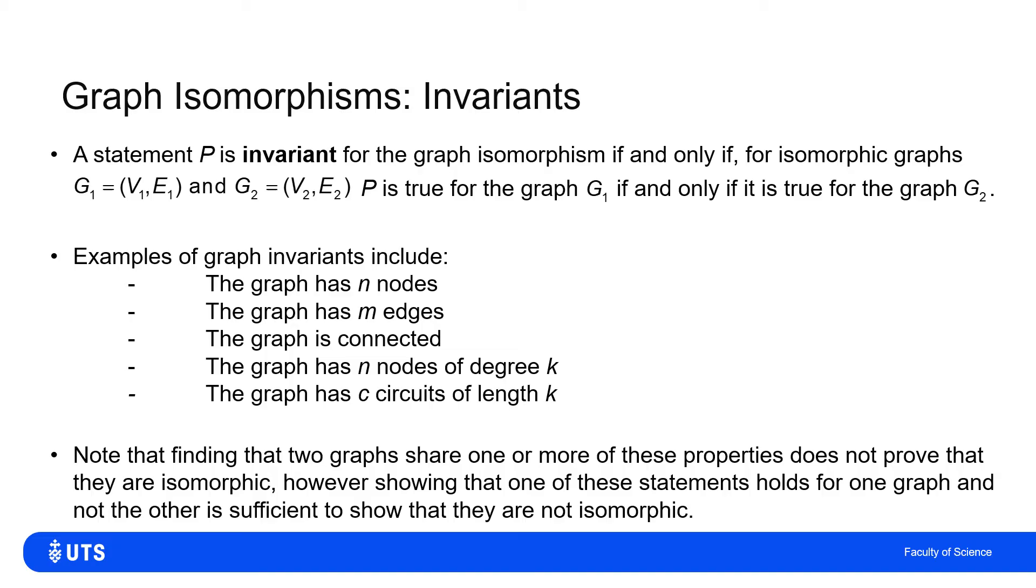Now, the thing to note is, if we're trying to assess whether two graphs are isomorphic and I haven't defined that bijection, I can't say that they are isomorphic because they satisfy any one or two of these invariants. I can't say this graph's got 10 edges, therefore it's isomorphic to this graph with 10 edges. But I can do the opposite. I can say this graph has 10 edges, the other graph has 11 edges, therefore they're not isomorphic. So I can't justify being isomorphic on the grounds of one of these things that would be invariant, one of these statements that would be invariant if they were isomorphic. But I can rule out isomorphism by failing one of these.